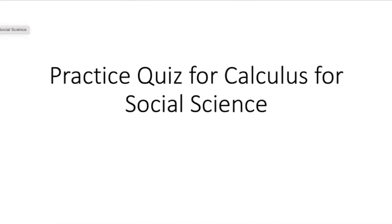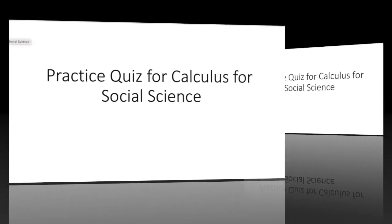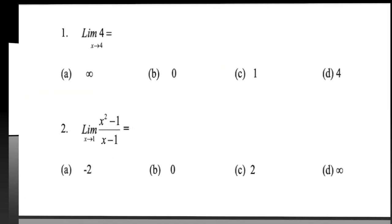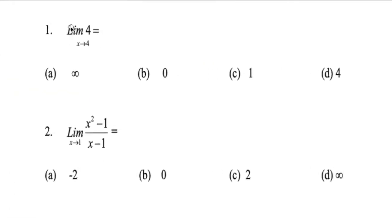Today we'll be doing a practice quiz for calculus for social science. Here we have the limit as x approaches 4. The limit of a number is a number, so the answer is just 4, which is D.